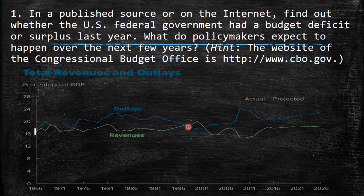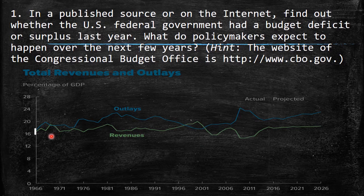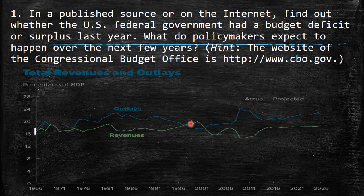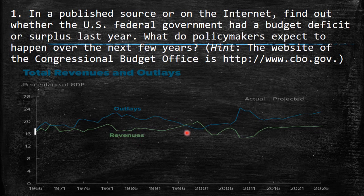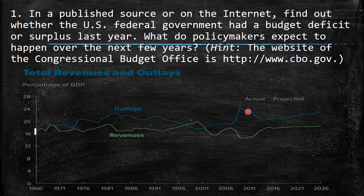Just during around two or three years, we saw a different trend compared to the rest of the time shown in the graph, where revenues were above outlays — what we call a budget surplus. But the trend continued as before, and afterwards the budget deficit was even higher as a percentage of GDP.